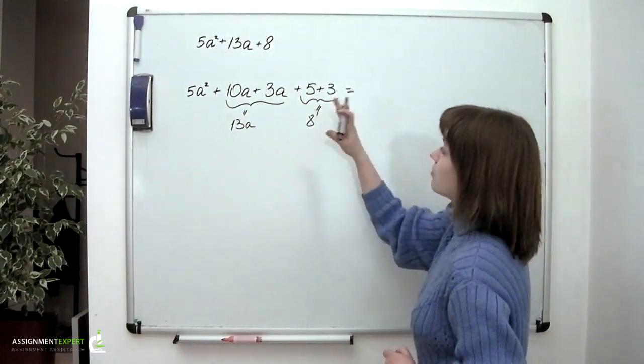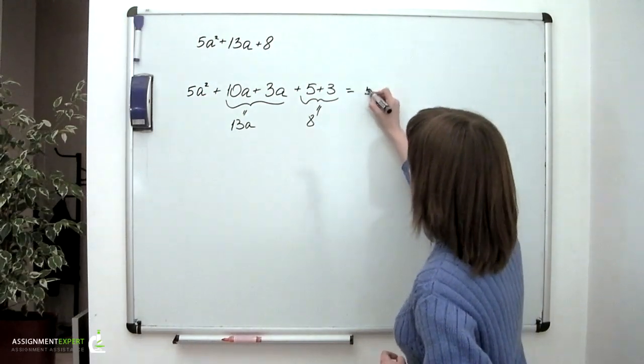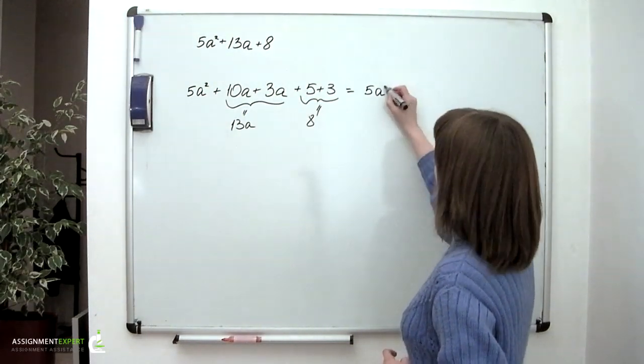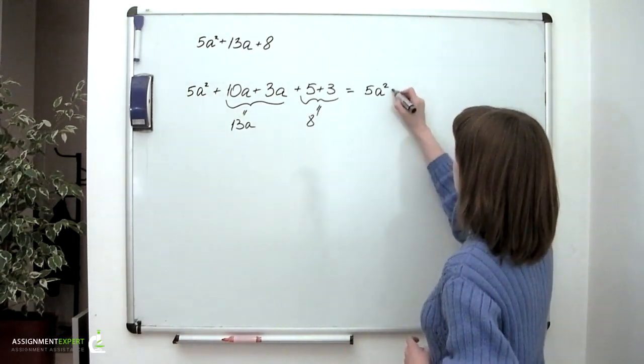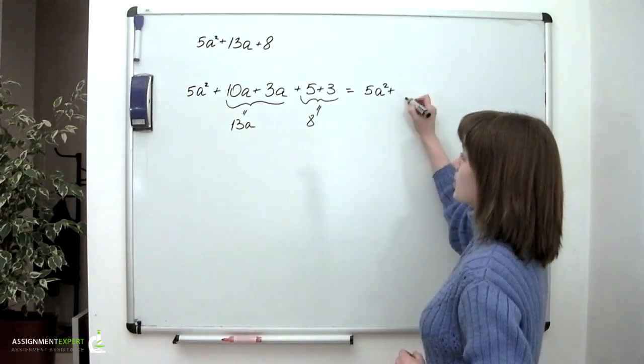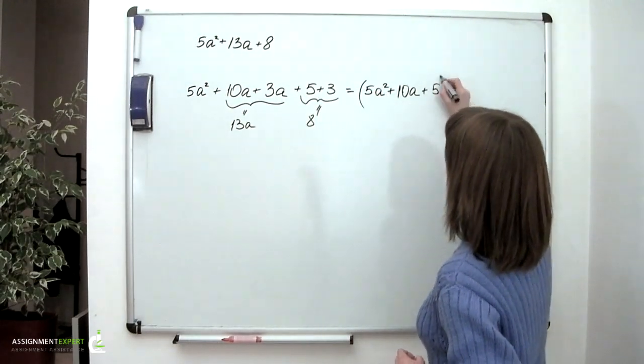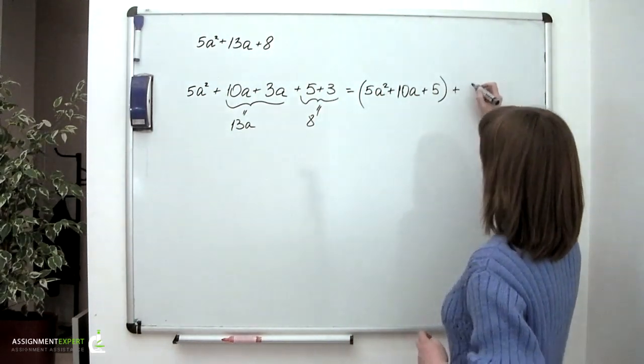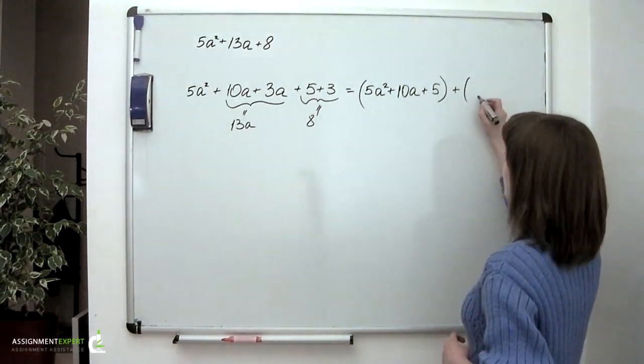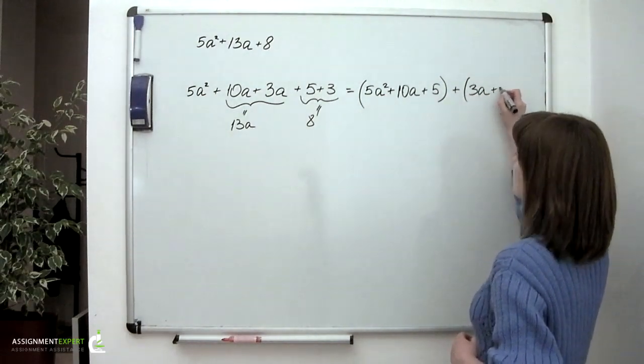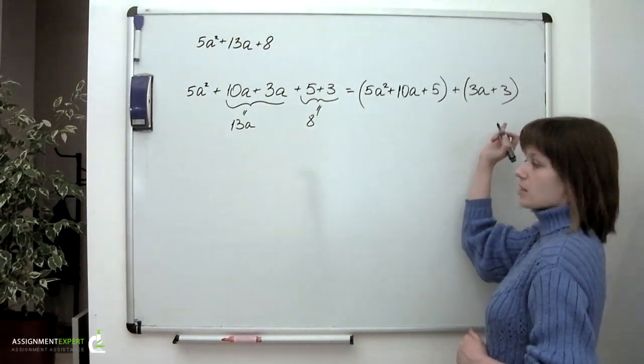Then let's rearrange them a little bit and go the following way. 5 times squared a plus 10a plus 5. This would be the first summand. And then we'll have 3a plus 3. This is the second summand.